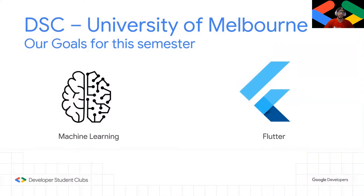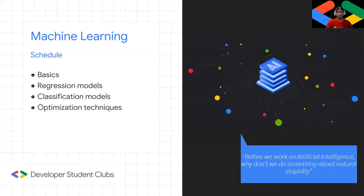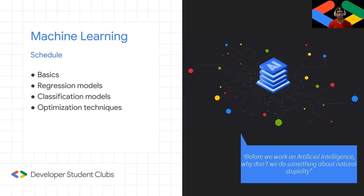Our goals for this semester will be focusing on the basics of machine learning and the basics of Flutter. Raksheth from the machine learning team will give a quick introduction: our machine learning workshops will take place each Wednesday from week four. Weeks four and five will cover basics like NumPy, Pandas, and Python. Week six and seven will cover regression models like linear regression and logistic regression. Week eight will cover classification models, and week nine will cover optimization techniques.